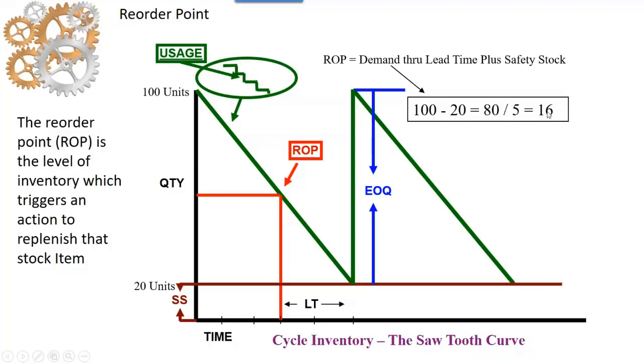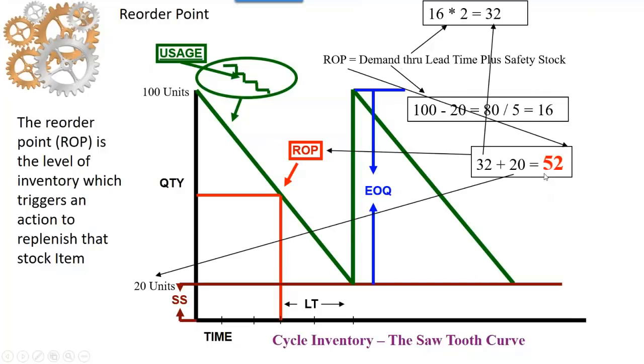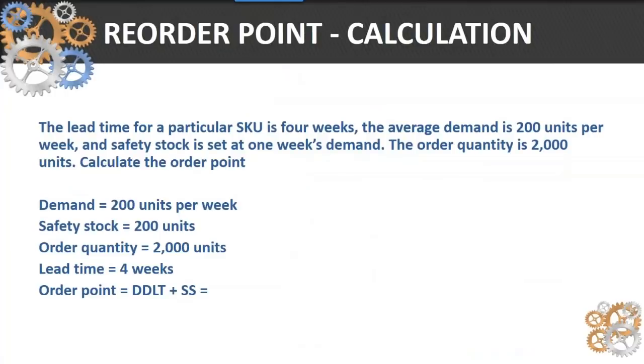So the demand through lead time is 16 times 2, or 32. And so therefore the reorder point is the demand through lead time plus safety stock, or 52 units. So when the inventory reaches that 52 point, we launch an order out into the system.